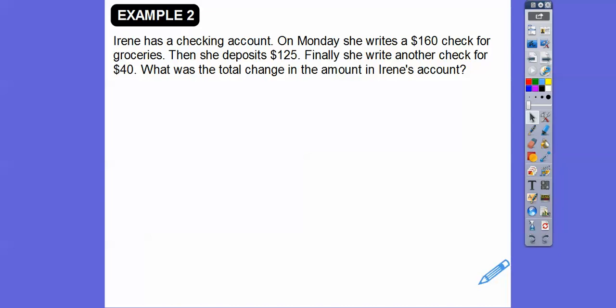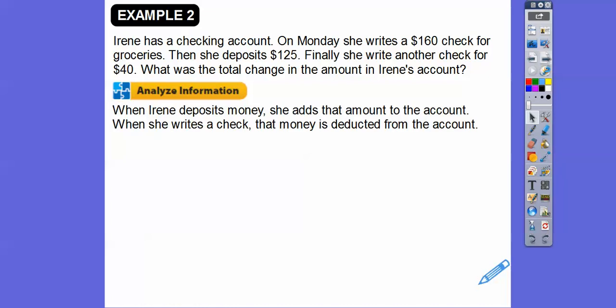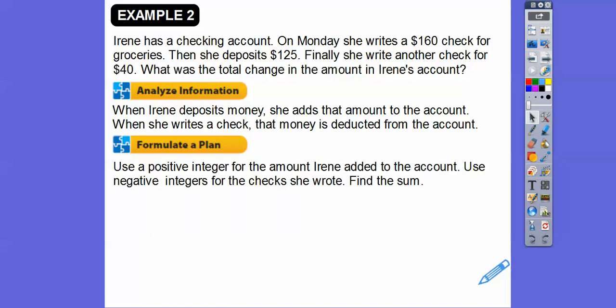Irene has a checking account. On Monday, she writes a check for $160 for groceries, so that means it's a minus $160 in her checking account. Then she deposits, that means she puts money back in, $125. Finally, she writes another check for $40. What's the total change in the amount of Irene's account? We don't know how much money she has in there, but they just want to know how much did it change with those three transactions. When Irene deposits money, she adds that amount to the account. When she writes a check, that money is deducted from the account.